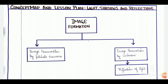Here is the second lesson plan from the chapter 'Light, Shadows and Reflection,' taken from the NCERT textbook of Class 6. As usual, we start with our concept map, where the concepts are connected to the sub-concepts.